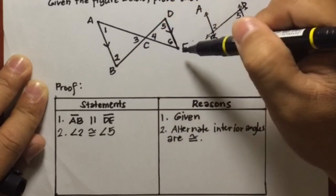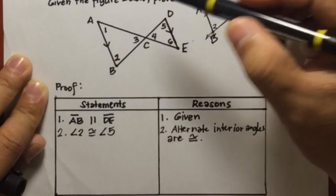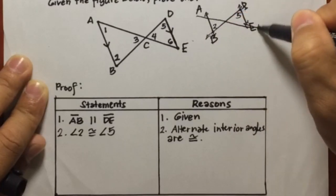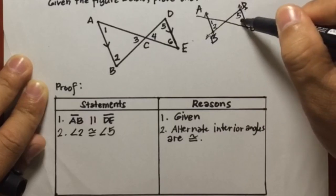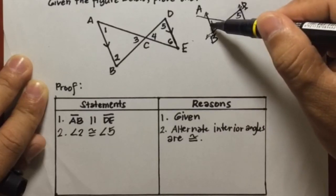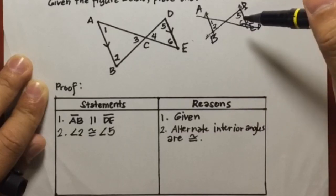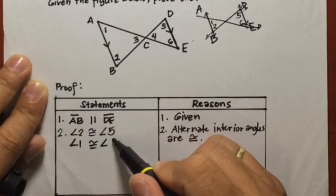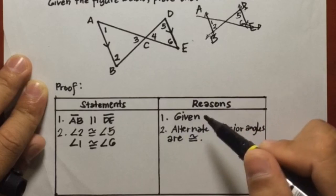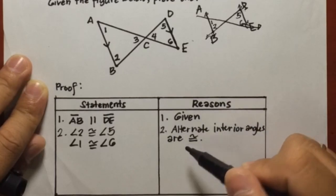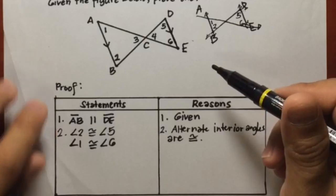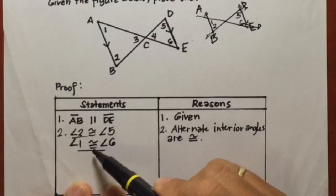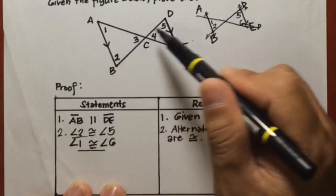Next, using line AE as the transversal, angles 1 and 6 are also alternate interior angles. Therefore, angle 1 is congruent to angle 6, and the reason is the same: alternate interior angles are congruent, based on the angles formed by parallel lines cut by a transversal. We have now proven that two pairs of angles are congruent in these two triangles.